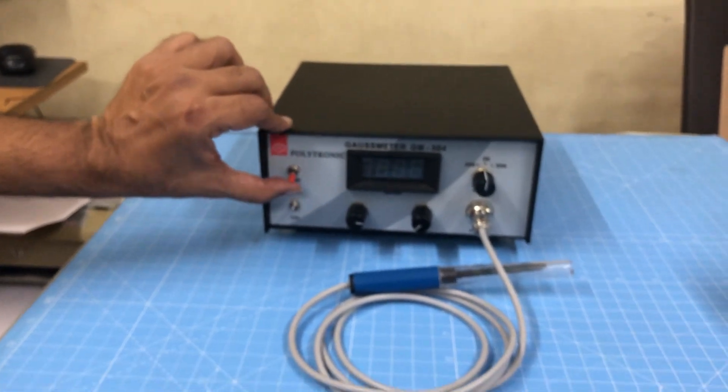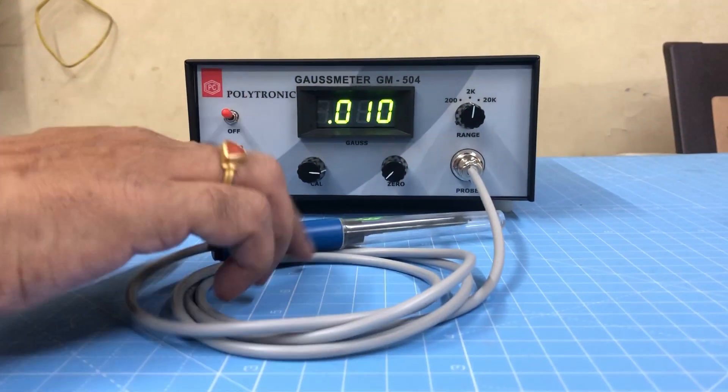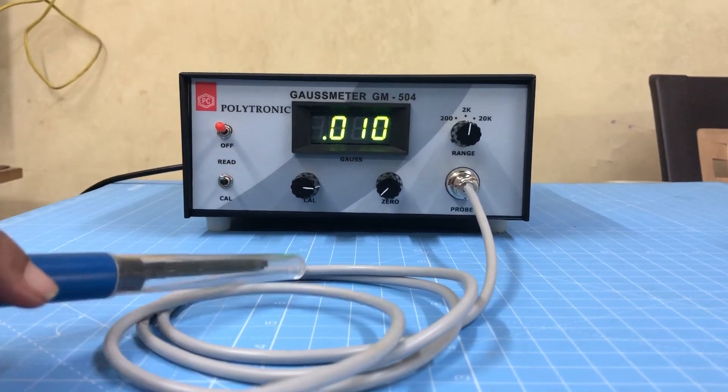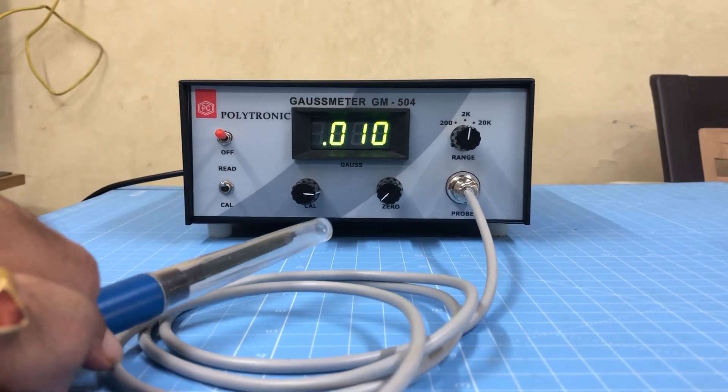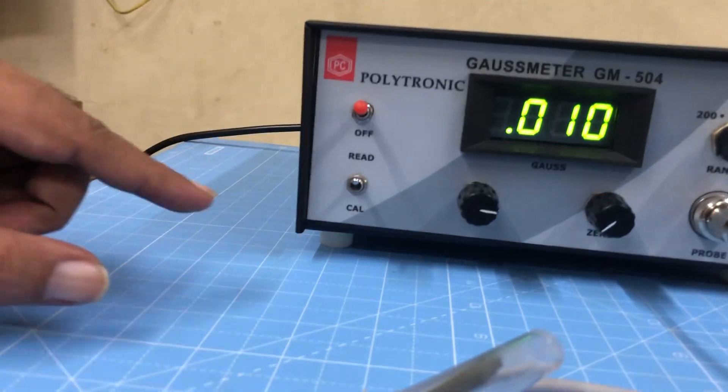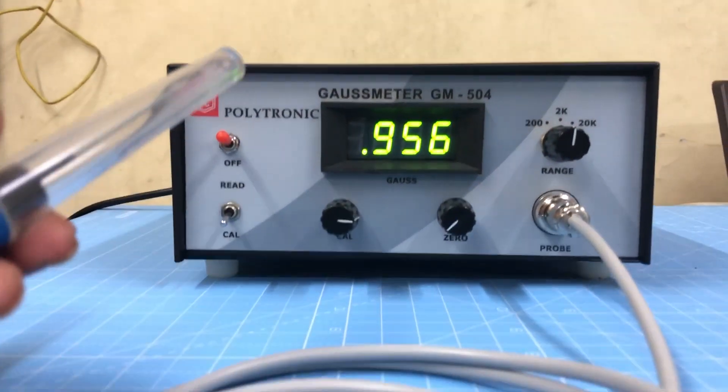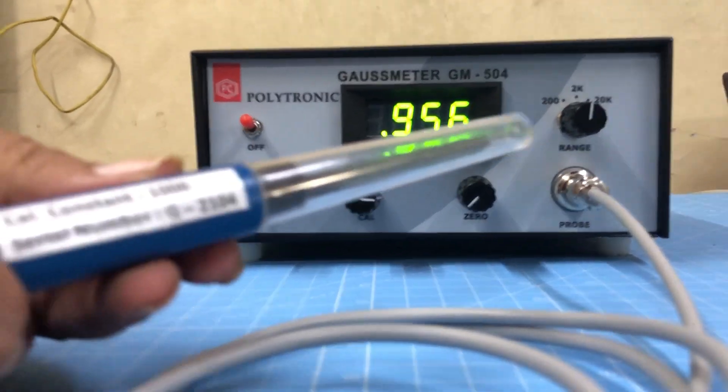Let us switch on the gaussmeter. Before taking measurements, the gaussmeter should be calibrated. We put the switch on the calibration position and adjust the calibration constant given on the probe.